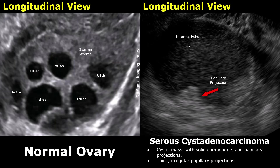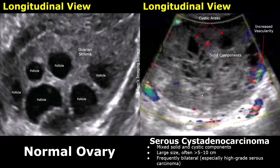These internal echoes are usually seen in mucinous tumors, but in malignant serous cystadenocarcinomas you may find internal echoes. Serous cystadenocarcinomas are much more common than mucinous cystadenocarcinomas. These are the irregular, thick papillary projections — papillary projection is this ingrowing tissue, and irregular shape is a sign of malignancy. Many cystadenocarcinomas can also have thick solid components along with cystic components. These tumors tend to be large in size, often measuring between 5 and 10 centimeters or even greater.